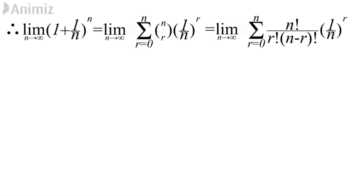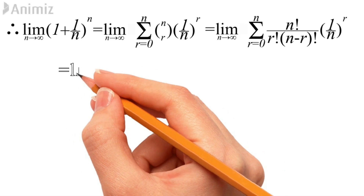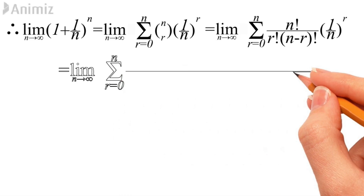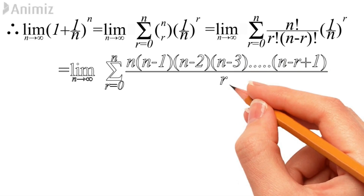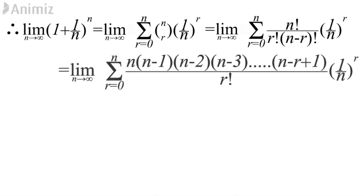If you know Binomial Theorem, you also know how to multiply or divide factorials. Dividing n! by (n-r)! gives n·(n-1)·(n-2)·(n-3)·...·(n-r+1), while r! and (1/n)^r stay the same, and the limit and summation stay the same.